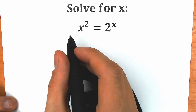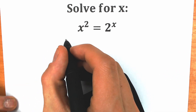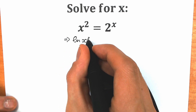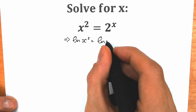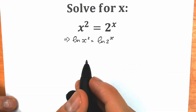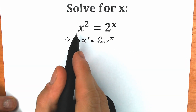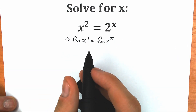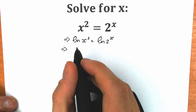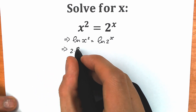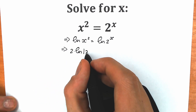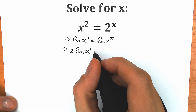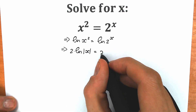First of all, let's apply natural log on both sides. When we apply natural log on both sides, we will have natural log of x squared equal to natural log of 2 to the power x. According to the main log property, the 2 will come down here and the x will come down here. So as a result, we have 2 times natural log of the absolute value of x — don't forget about this, because x can be positive or x can be negative — equal to x times natural log 2.